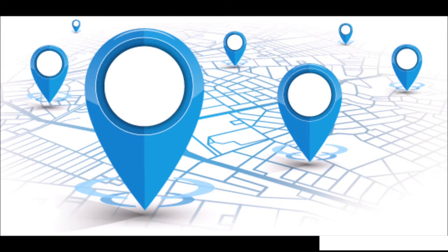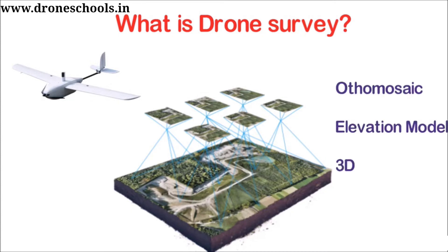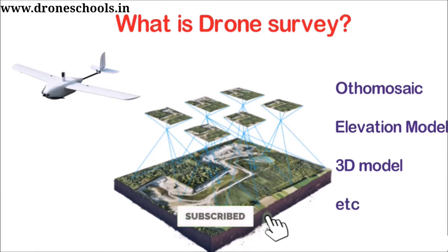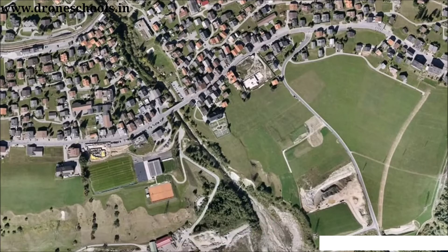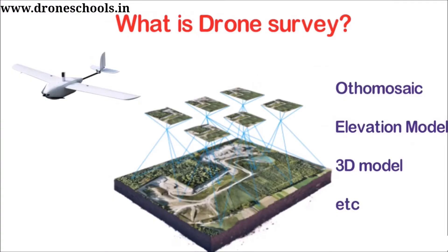After the completion of image acquisition, these images are stitched together to create different types of output like ortho mosaic, DSM, DTM, contour, 3D model, etc. Many viewers may not be aware of what exactly ortho mosaic, DSM, DTM, contour, and 3D model mean. Don't panic — I will explain all these terminologies in a simple way in my upcoming videos. Stay tuned and consider subscribing to the channel.